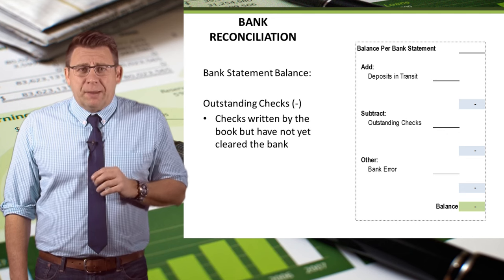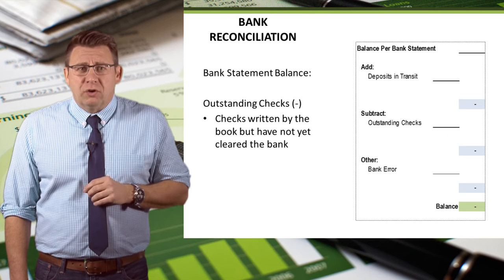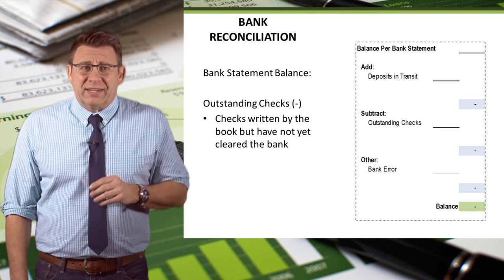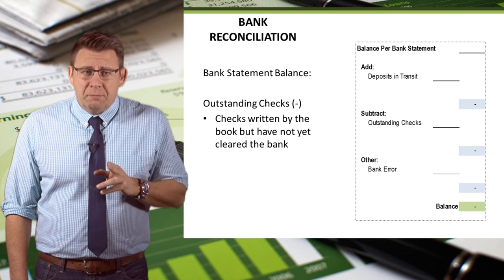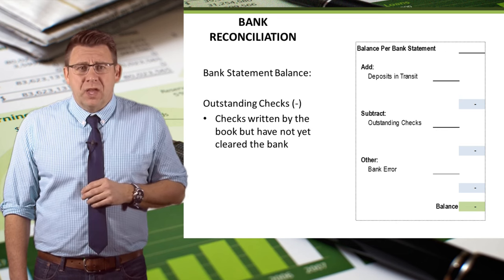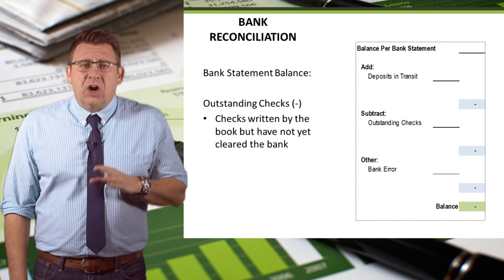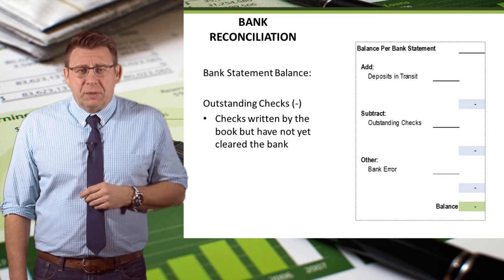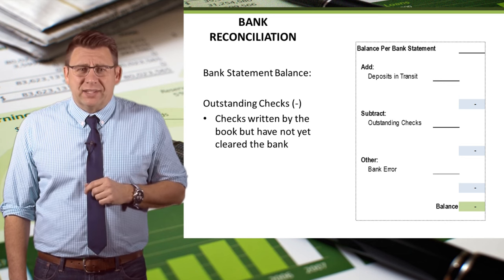Another example of something the book knows about but the bank does not are checks written but that have not yet cleared the bank. These are known as outstanding checks. They are deducted from the bank statement balance in the reconciliation process.